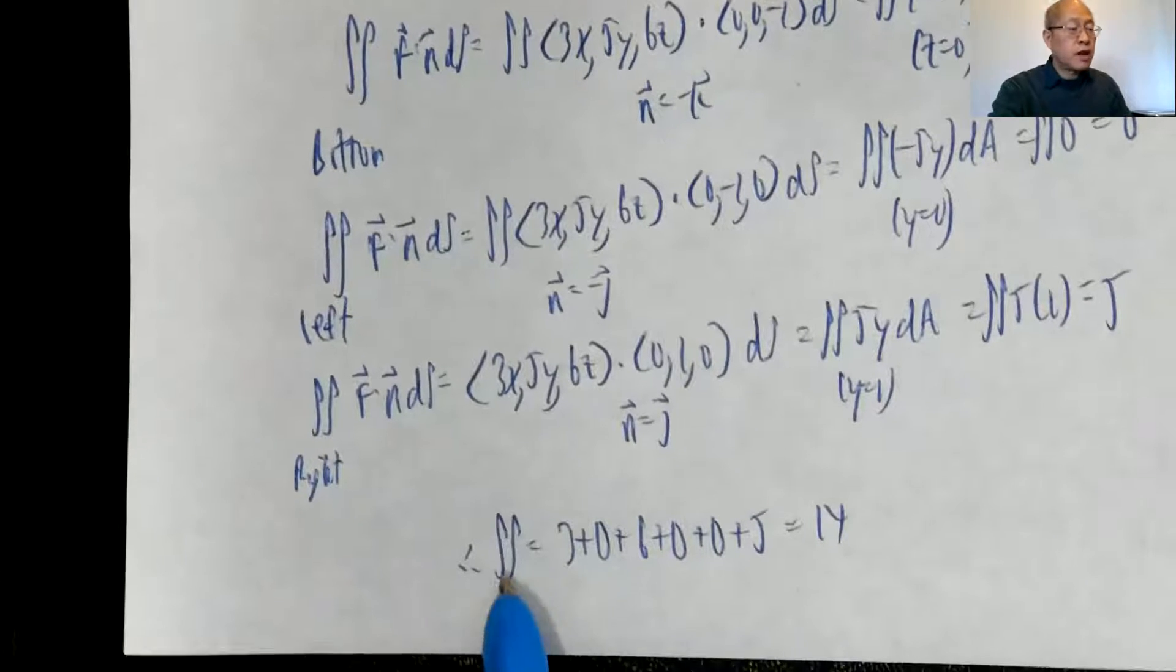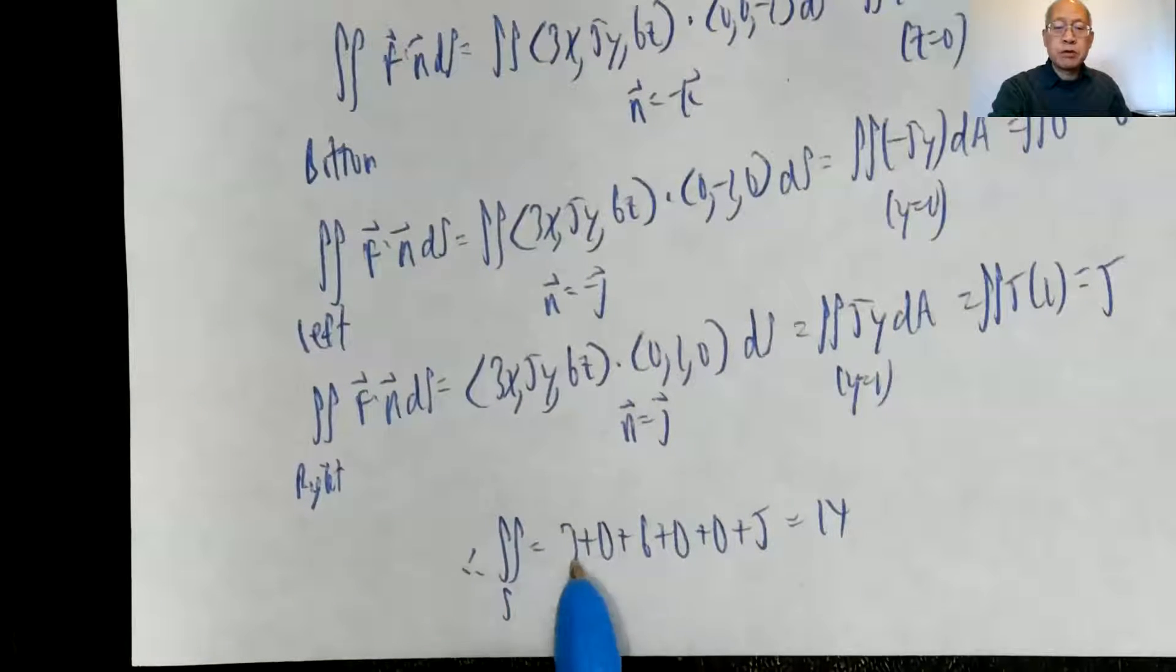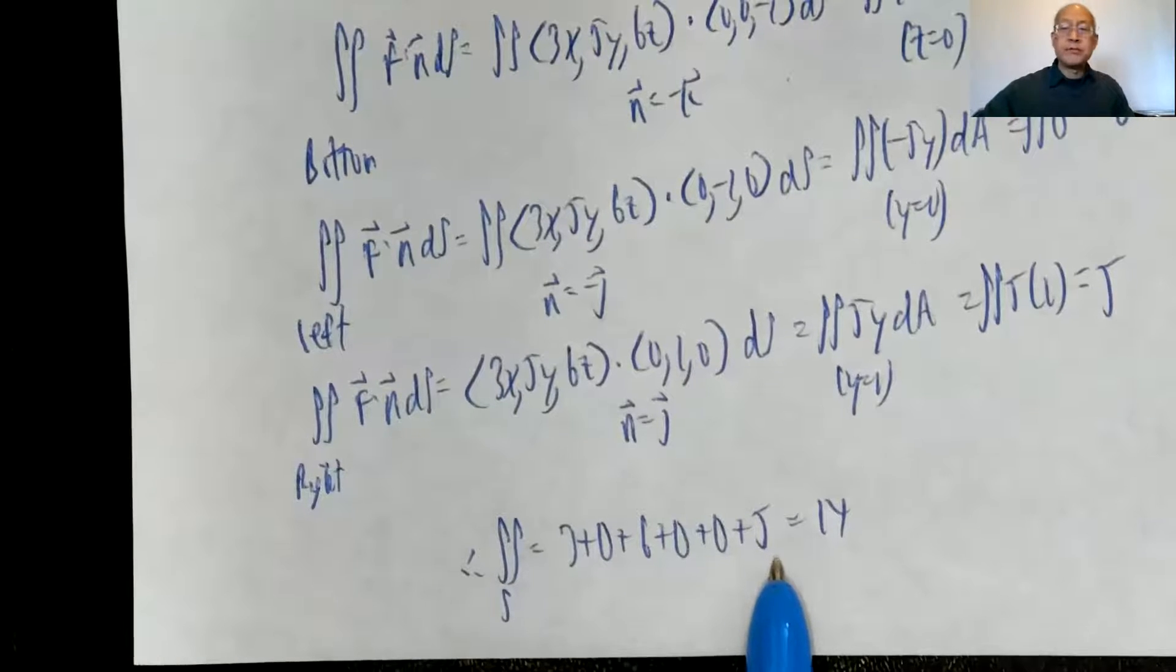So the total flux of F across S, just add them up: 3 plus 0, plus 6, plus 0, plus 0, plus 5, and it comes out to be 14. So the answer is 14. All right, so that was quiz 11 for calc 3.